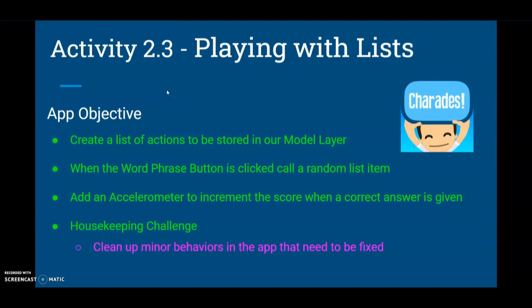Today we're going to take a look at the second part of our charades game app, which comes in activity 2.3, playing with lists. Our app objective for this activity is to learn how to create a list of actions that can be stored in what we call our model layer, or otherwise known as a data layer. We're going to access that information when we click on the word phrase button and call a random list item to appear.